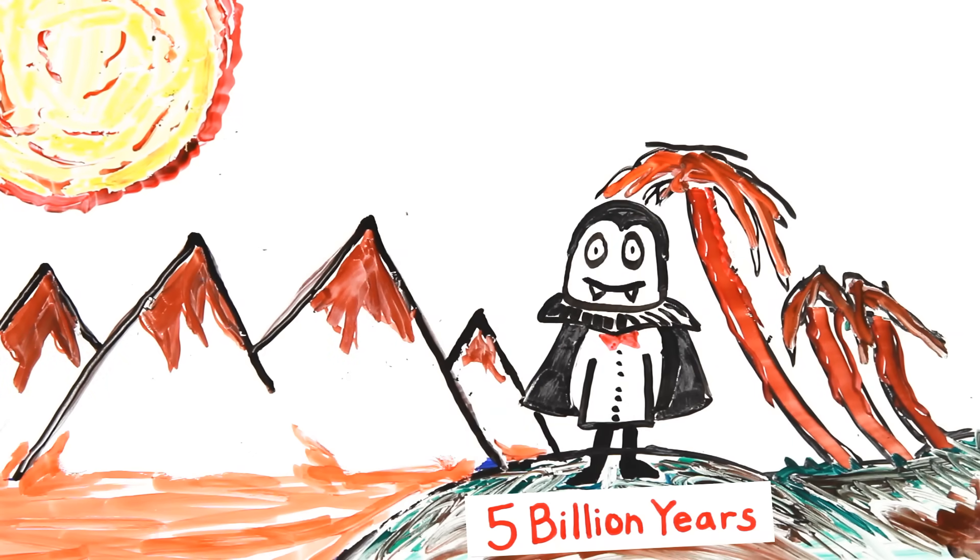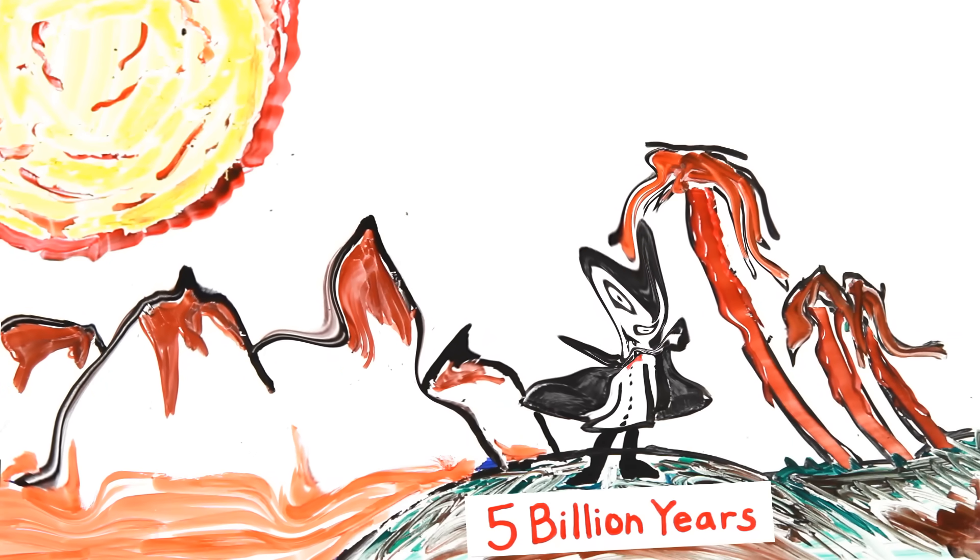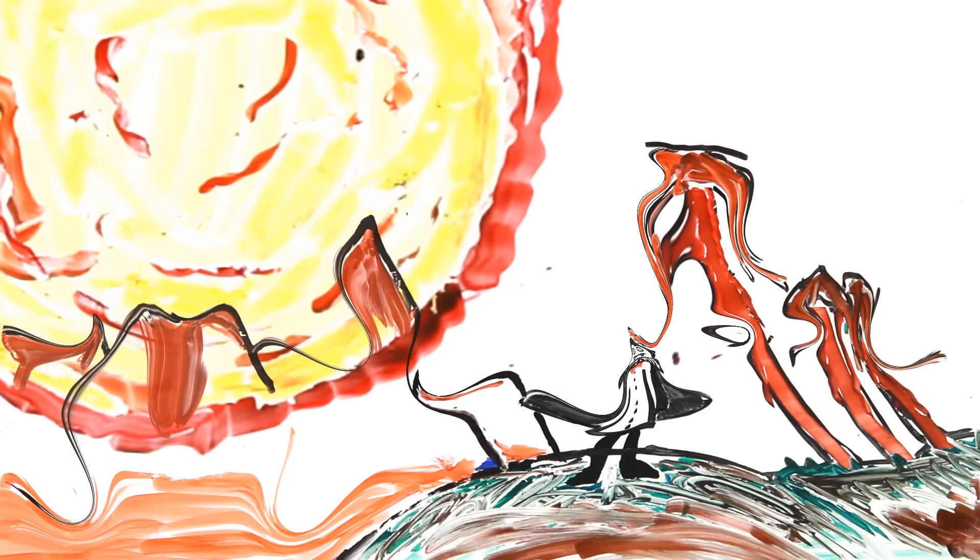Flash forward about 5 billion years, and the swelling Sun will begin literally melting mountains, with most, if not all, life on Earth now extinct. Around 7.5 billion years, the expanding Sun, now a red giant, will engulf the Earth entirely.